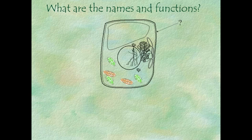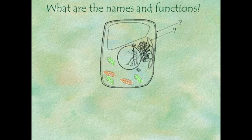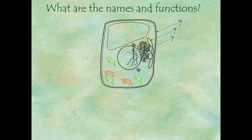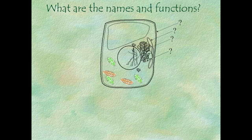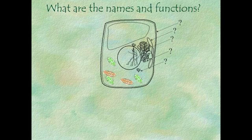Looking at this diagram, hopefully you realize that the outermost structure is the cell wall. This is pointing to the little flattened structures on the outside, which are of course the Golgi bodies. These wiggly lines coming between the nucleus and the cell membrane — the ones with dots on them — would be the rough endoplasmic reticulum. The wiggly lines without the dots would be the smooth endoplasmic reticulum. The little dots are ribosomes.